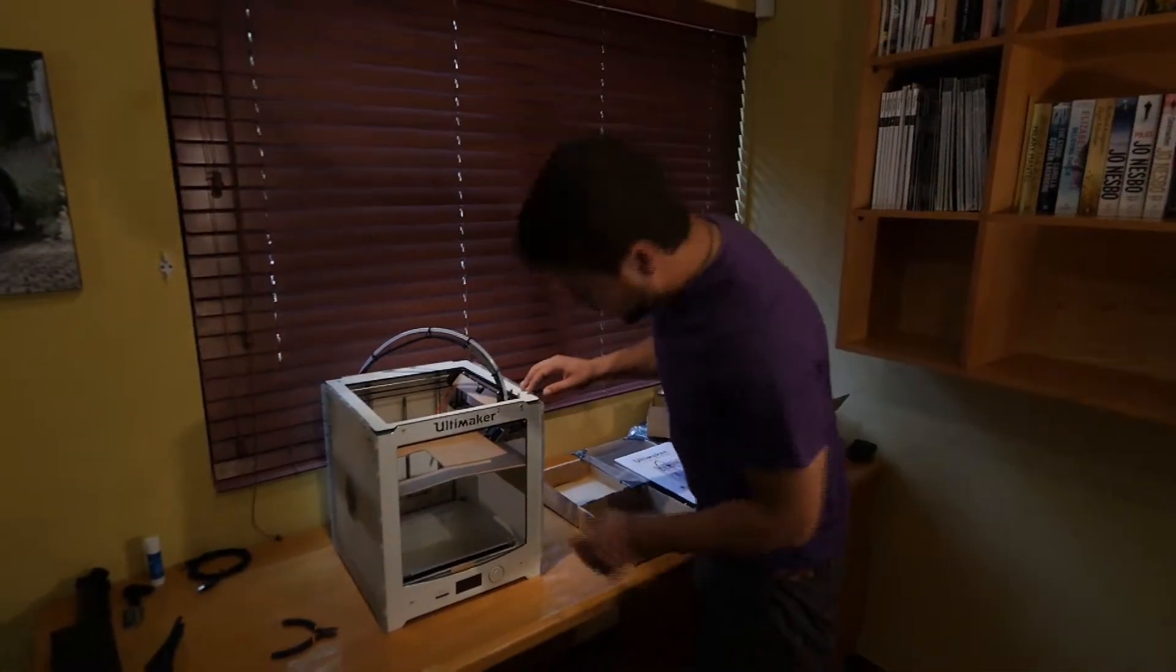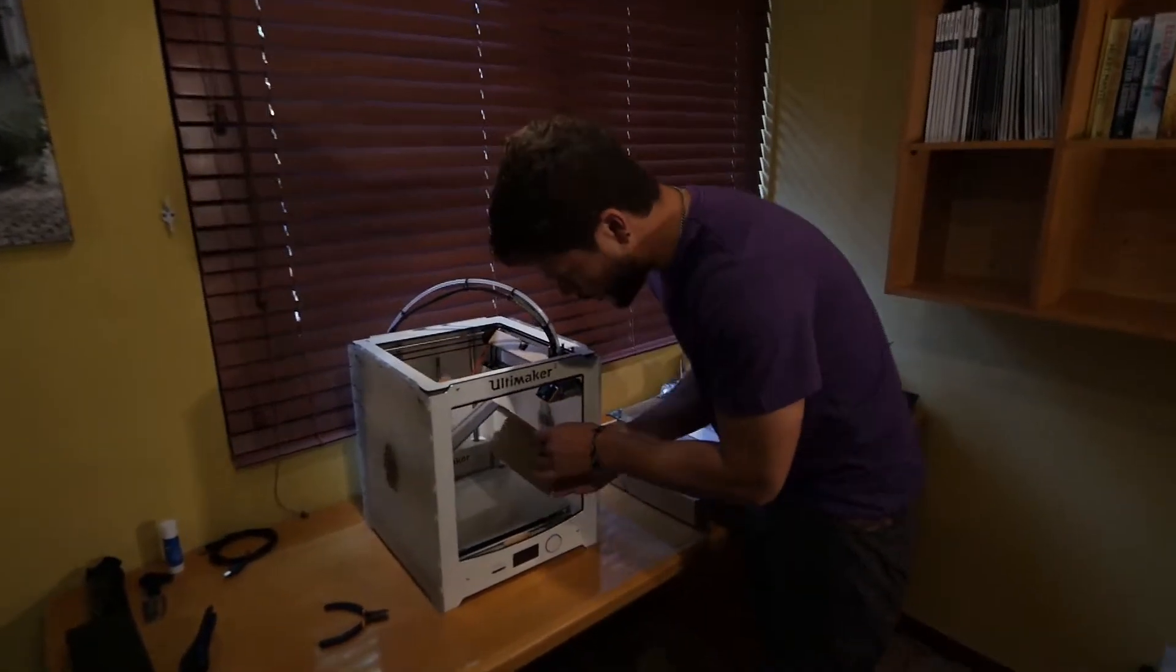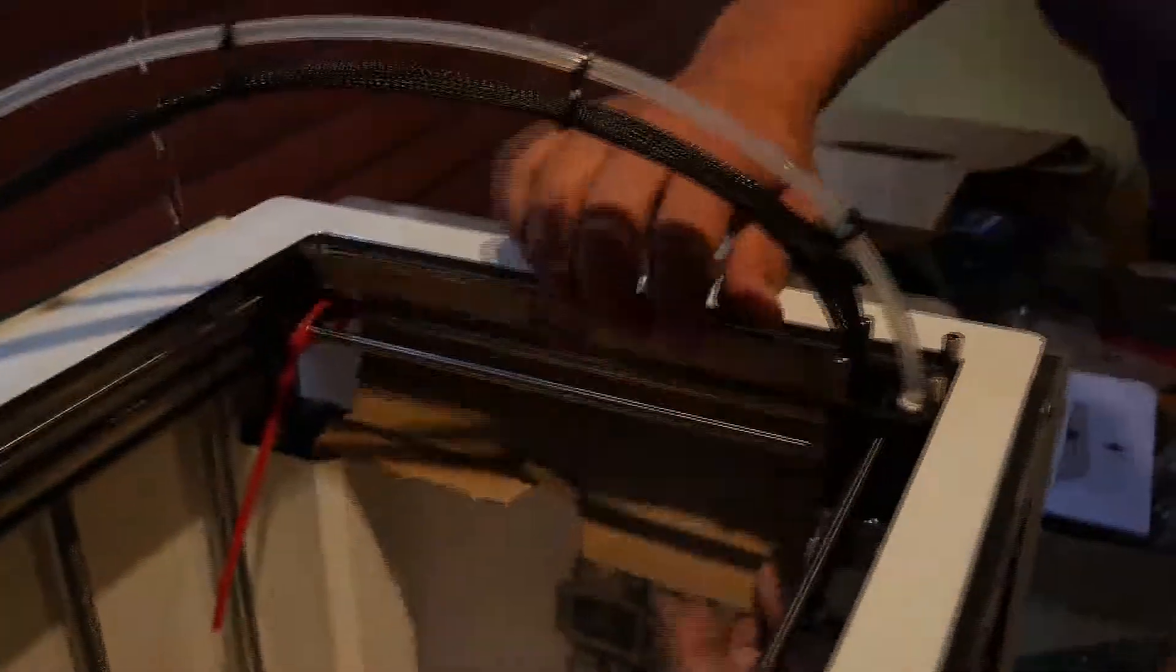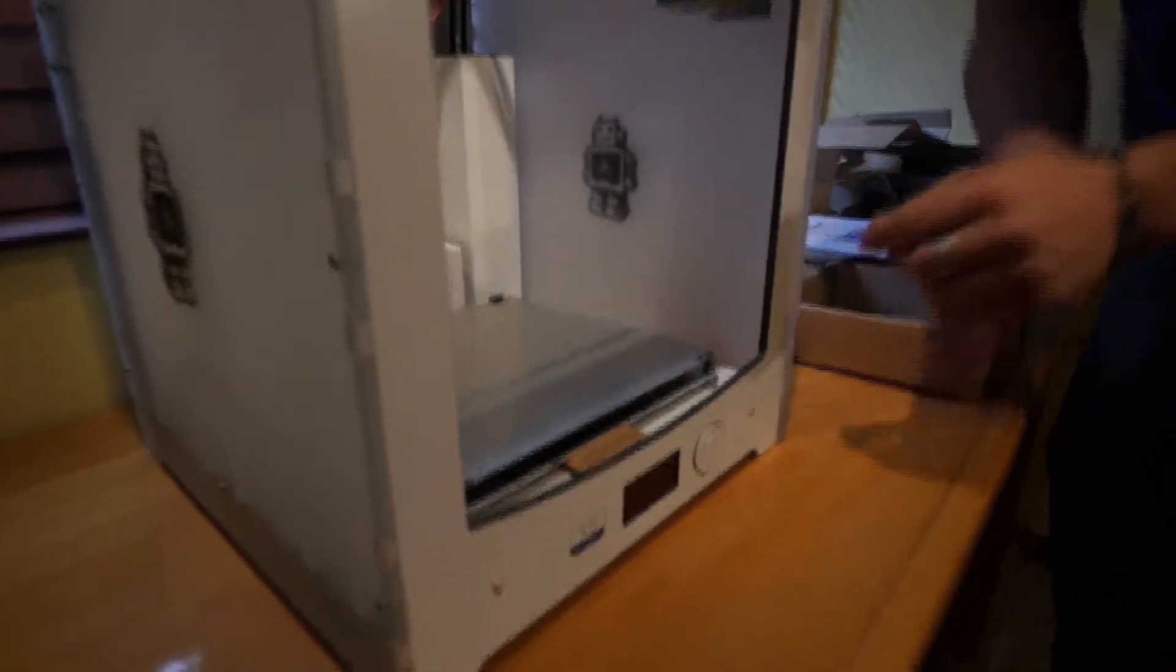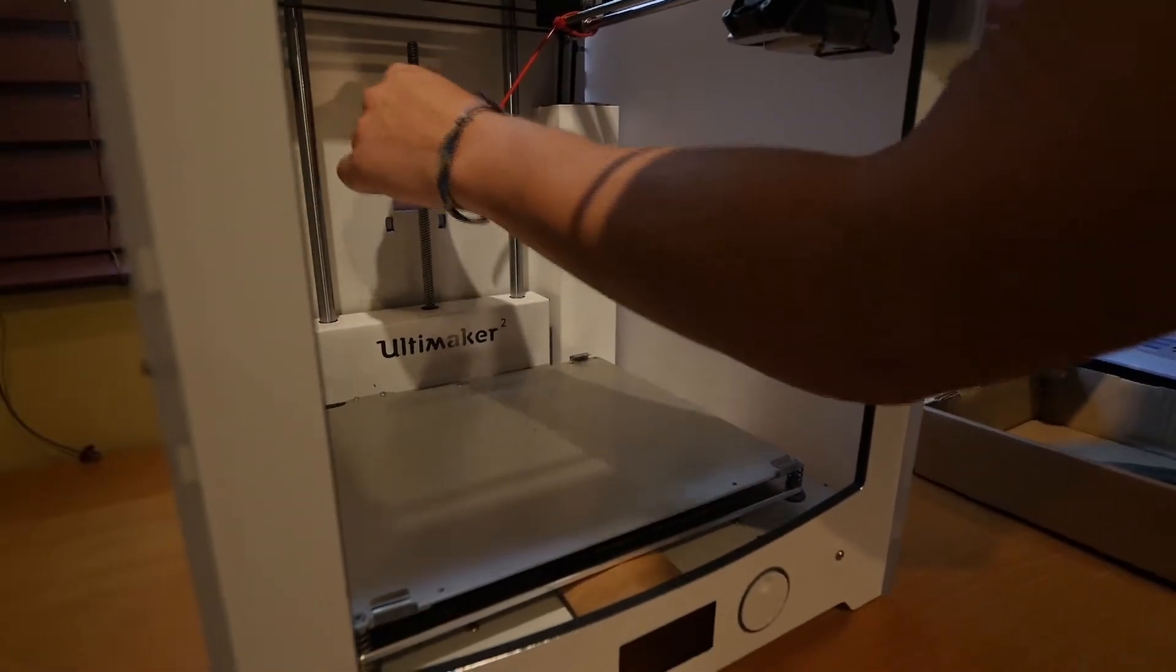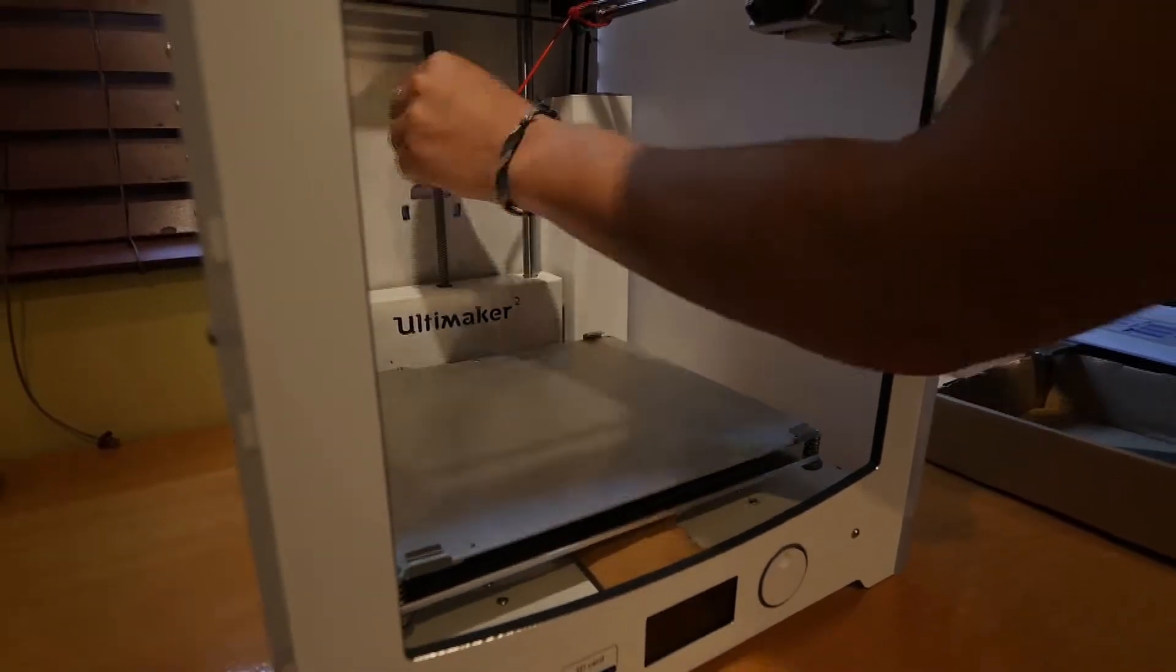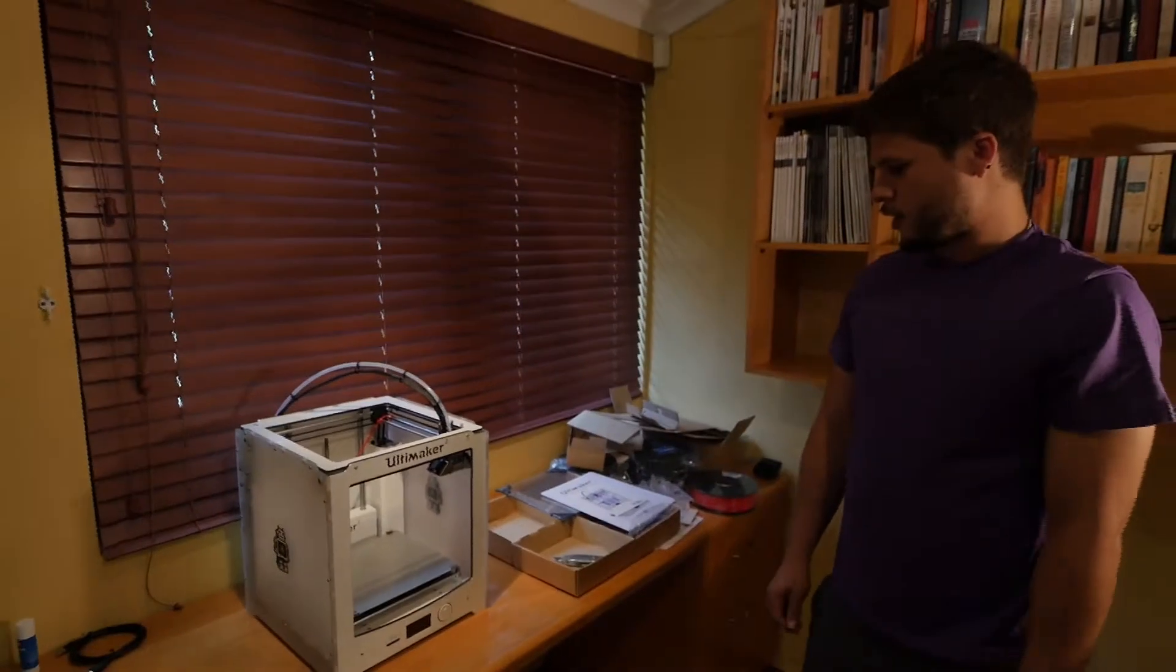So now what we need to do is just take out these cardboard pieces on the inside of the Ultimaker 2 here. There's another piece that looks like it's under the build platform here. What we can do is just lift the lead screw at the back here. And then try and get under there to get that piece of cardboard out. And that's all the cardboard out of the Ultimaker. Looking good.